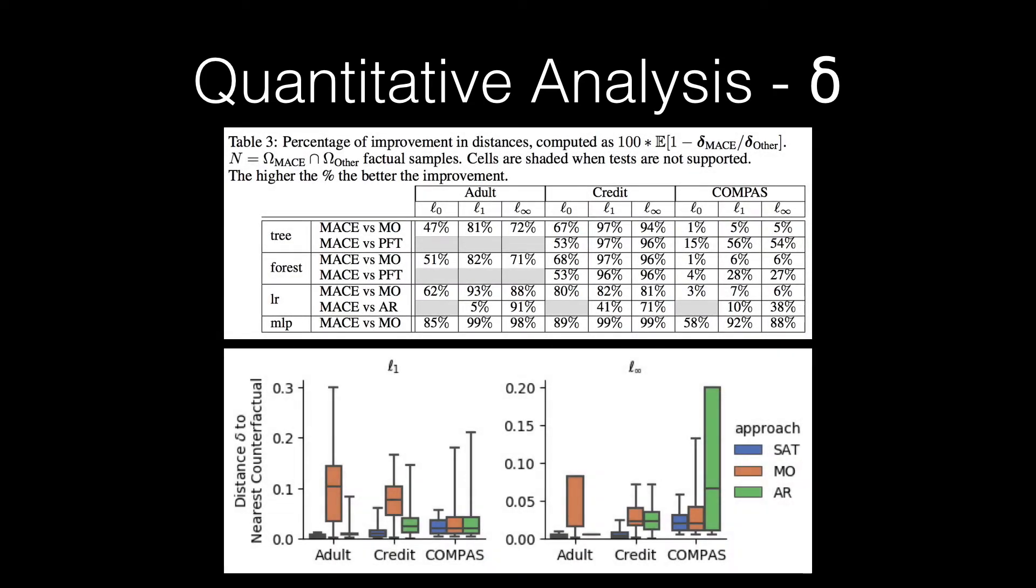After arriving at a set of plausible counterfactual explanations for the same factual samples, we are able to compute the relative distance reductions achieved when using MACE, which we said was optimal, as compared to other approaches. This is shown in Table 3.